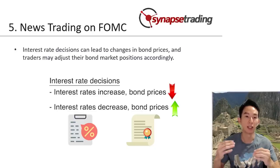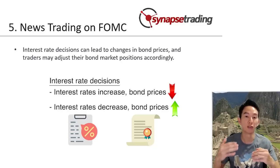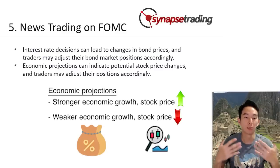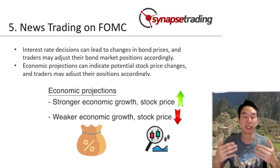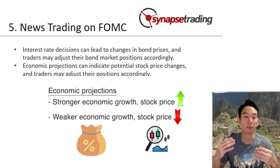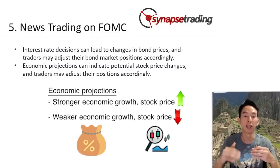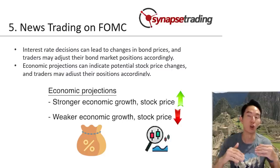Number two: economic projections. If the FOMC economic projections indicate stronger than expected economic growth, traders may anticipate that this could lead to higher stock prices, and thus they will adjust their positions accordingly. Conversely, if the FOMC projection indicates weaker than expected economic growth, then traders will anticipate that this will lead to lower stock prices.